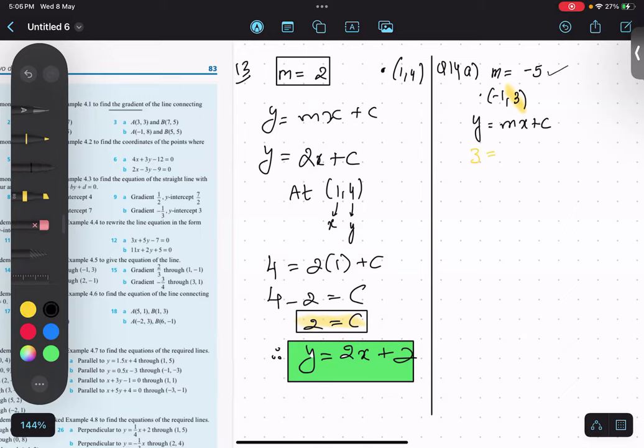What is my m value? M value was given at the top, minus five. And what is my x value over here? X value is minus one.